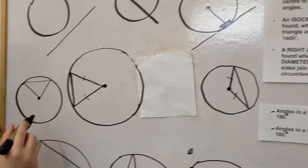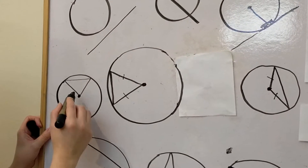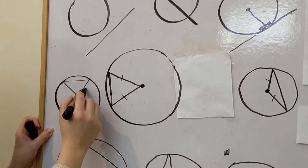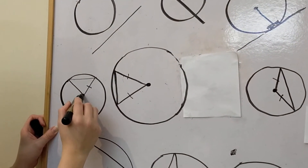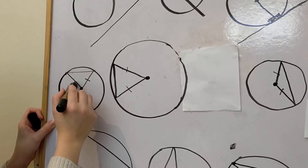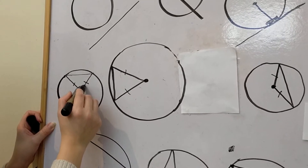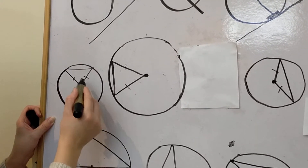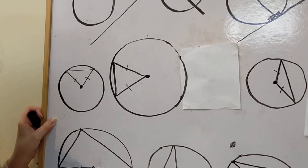And again here, there's a line from the centre to the edge, so they're both radii — making that an isosceles triangle as well.